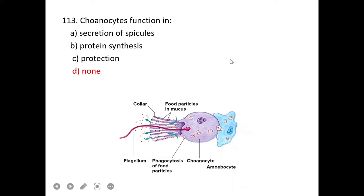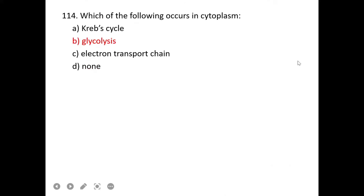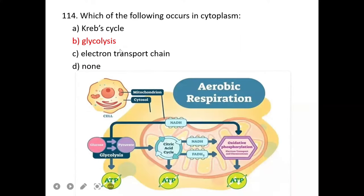Ammonia secretion requires plenty of water, so freshwater fishes which don't face water shortage basically excrete ammonia as their excretory product. D is correct. Aligarh Movement was started by Sir Syed Ahmad Khan.